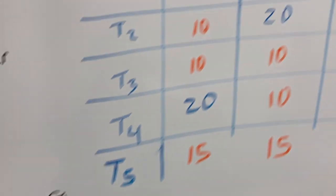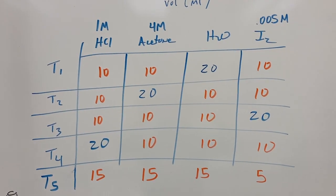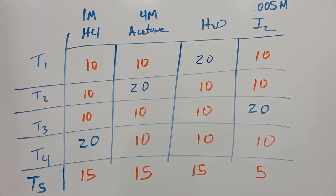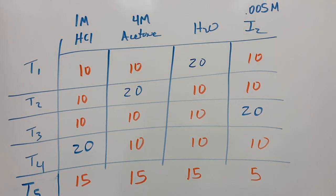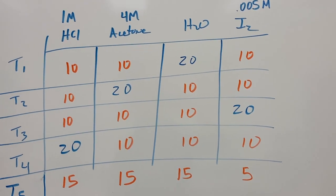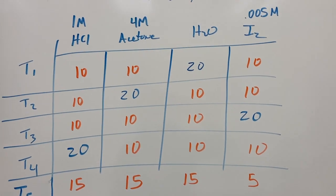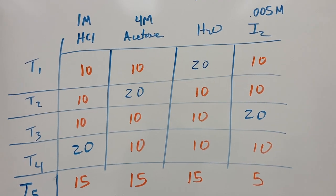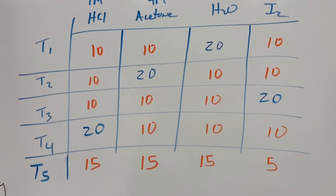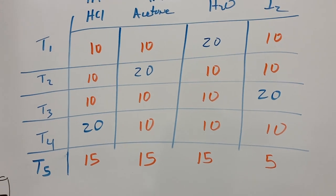Our experimental setup has a table where we vary the concentrations of each of the reagents. Note that in each trial, the total volume is 50 milliliters. In trial one, we take 10 milliliters of each of the reagents except for water. The water is used primarily as a buffer to make sure we can achieve equal total volumes every trial — water itself is not a reactant. In trial two, we're doubling the acetone. In trial three, we're doubling the iodine. In trial four, we're doubling the HCl. And a fifth trial has varied amounts different from what we had previously.